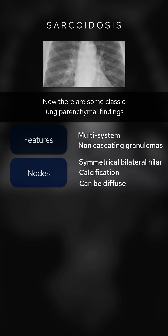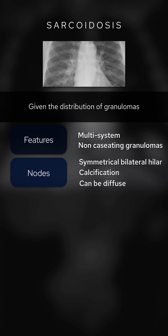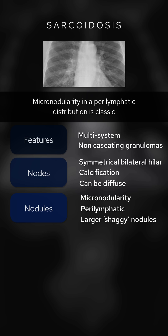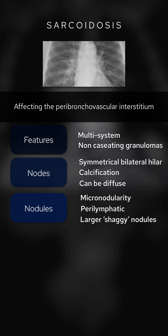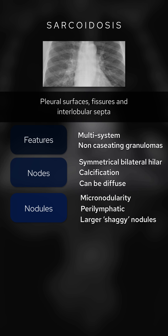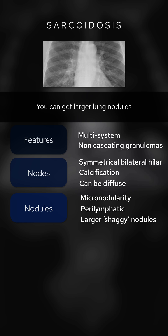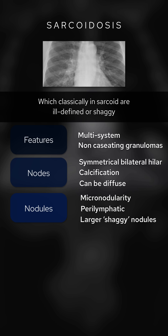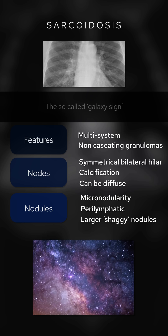There are some classic lung parenchymal findings given the distribution of granulomas. Micronodularity in a perilymphatic distribution is classic, affecting the peribroncho­vascular interstitium, pleural surfaces, fissures, and interlobular septa. You can get larger lung nodules which classically in sarcoid are ill-defined or shaggy. Larger nodules can have smaller nodules surrounding them — the so-called galaxy sign.